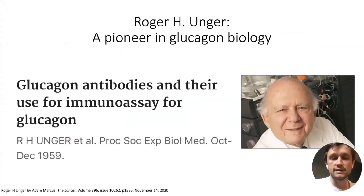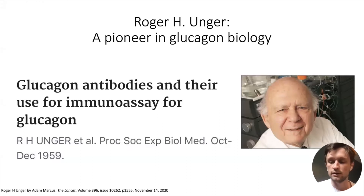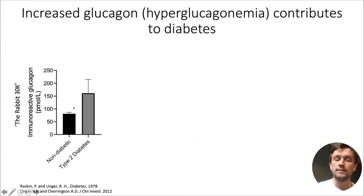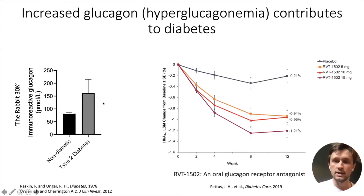We need to recognize one of the many important contributors to glucagon biology, Dr. Roger Unger, whom we unfortunately lost last year. He was a pioneer in glucagon biology and its measurement. In 1978, he and his colleague Raskin showed that the difference between persons without diabetes and those with type 2 diabetes was increased plasma levels of glucagon. This is important because for the last 40 years or so, glucagon receptor antagonists have been developed.